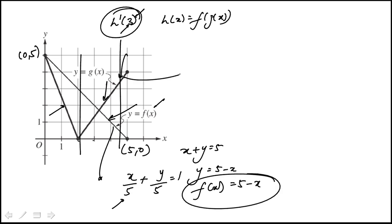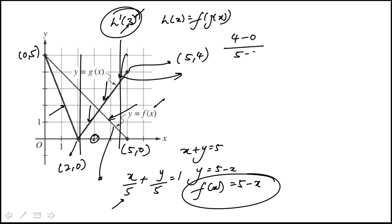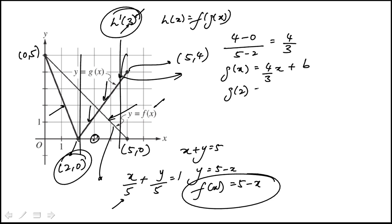Now I have to do the same thing with g, and I'm only looking at this linear portion because I'm interested in the derivative at x equals 3. The points are (2, 0) and (5, 4). I can find the slope: difference in y over difference in x is 4/3. So g of x is (4/3)x plus b. Using the condition that when x equals 2 the value is 0, b equals negative 8/3. So g of x is (4x minus 8) over 3.